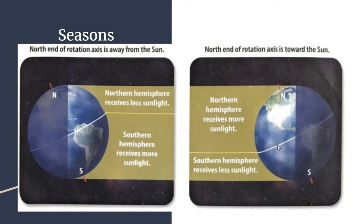In this diagram, you can see that when the northern hemisphere is tilted away from the Sun, it receives a lot less sunlight — less of that hemisphere is in the illuminated half of the Earth at any one time. The southern hemisphere receives more sunlight, and you can see more of it is lit up. That makes the days longer in the southern hemisphere and shorter in the northern hemisphere.